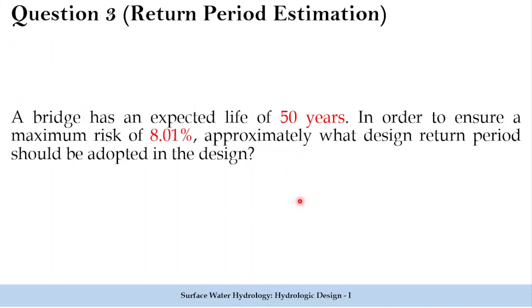Now let us solve another problem to estimate the return period. A bridge has an expected life of 50 years. In order to ensure a maximum risk of 8.01 percent, approximately what design return period should be adopted? The lifespan n is 50 years, the maximum risk is 8.01 percent, and we need to find the design return period.